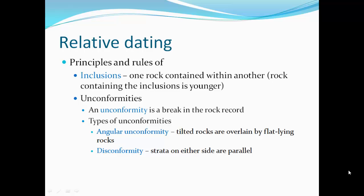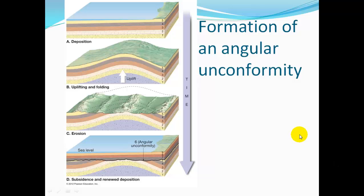Unconformities happen when there's a break in the rock layer — some of the rocks were eroded away, leaving a gap in time. An angular unconformity is where tilted rocks are overlaid by flat-lying rocks. A disconformity is where strata on either side are parallel. Here's a formation of an angular unconformity: we have horizontal layers from oldest to youngest, some uplift occurs forming an anticline, the uplifted land is eroded away, then a new ocean basin forms with horizontal sediments laid on top. So we have uplifted rock with horizontal rock on top with a break in time — this is an angular unconformity.